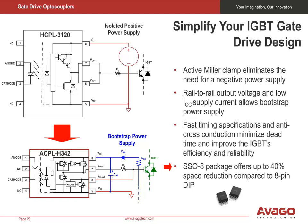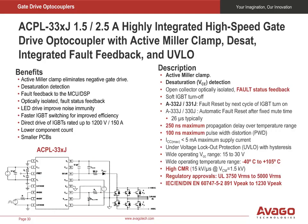The ACPL-33XJ series of 1.5 and 2.5 amp integrated gate drive optocouplers are our most advanced gate drivers. Besides the normal built-in features such as high common mode rejection, undervoltage lockout protection, wide VCC range, worldwide safety approval, low supply current, and short propagation delay, the series has built-in switch protection, desaturation protection, an active Miller clamp, fault feedback plus reset, and soft shutdown. The devices have a wide operating temperature range of minus 40 to 105 degrees C. These highly integrated gate drivers will reduce your system component count and will use less PCB area.